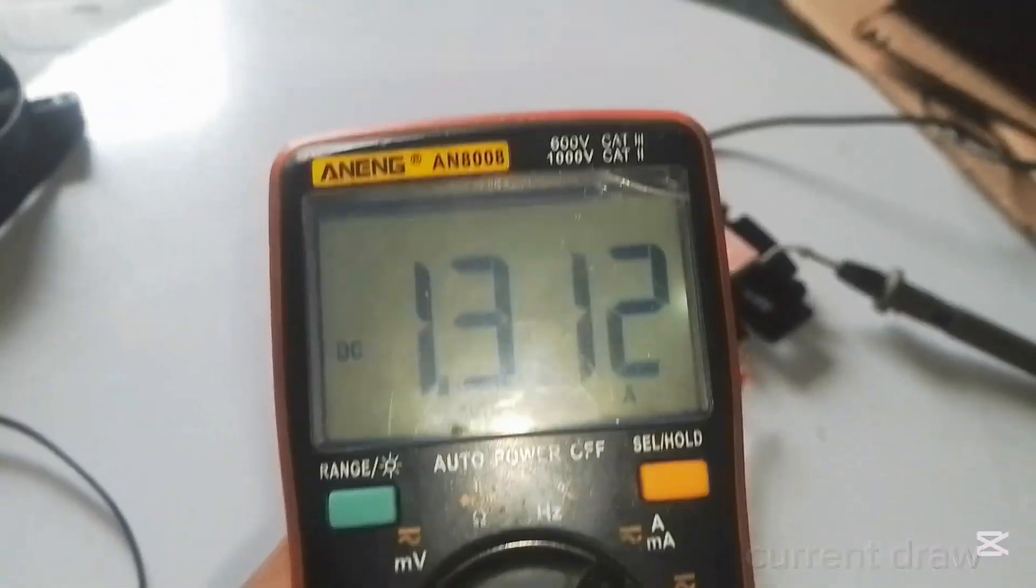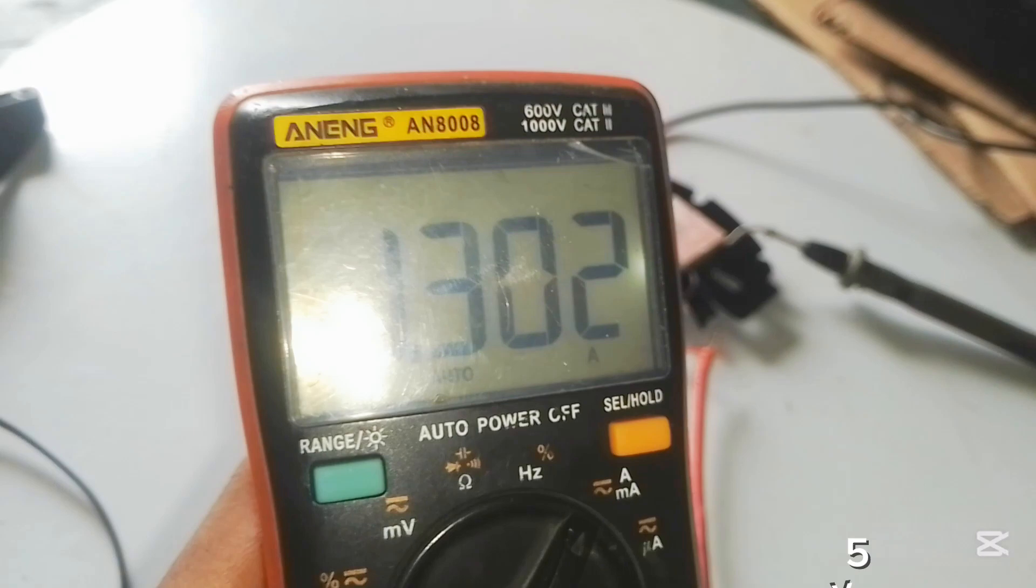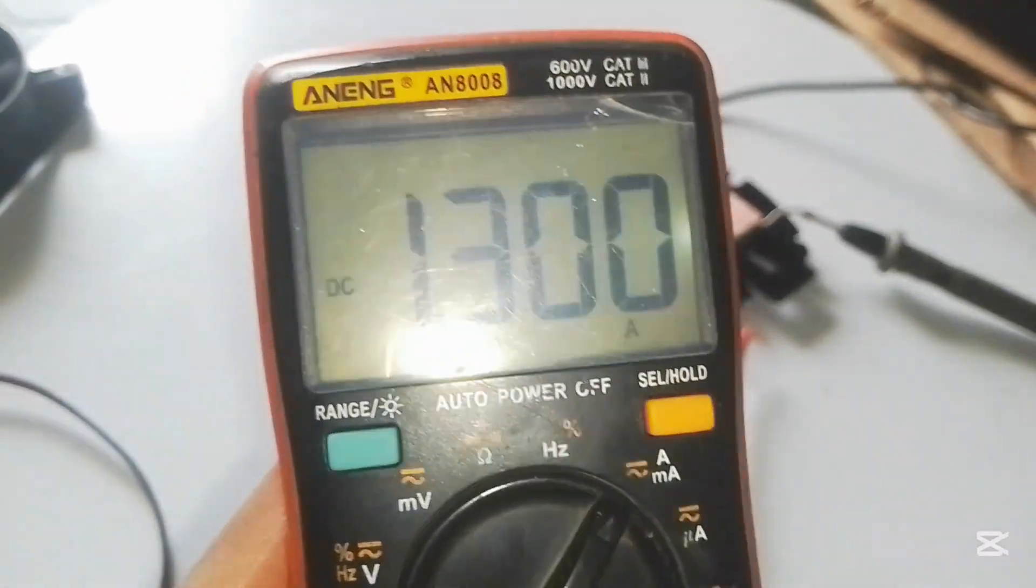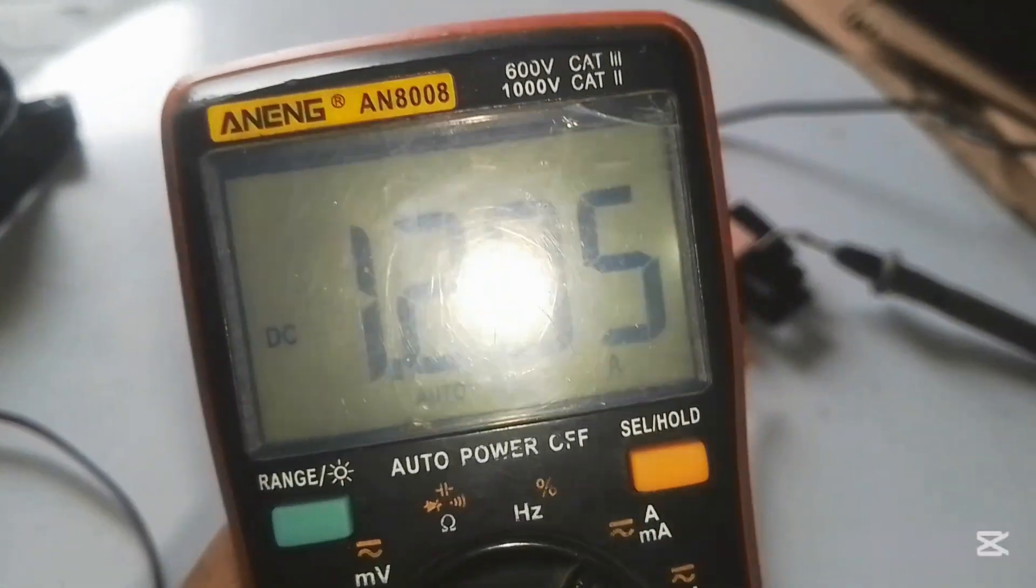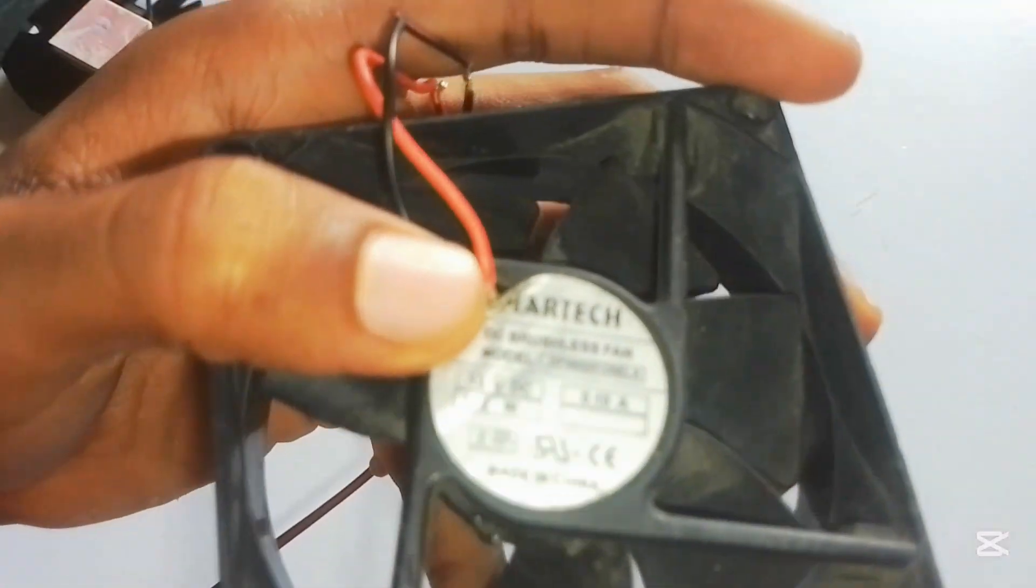Checking the total current drawn from the Peltier module when it's connected to a 5 volt power supply, we can see close to 1.5 amps, which is close to the value stated in the beginning.